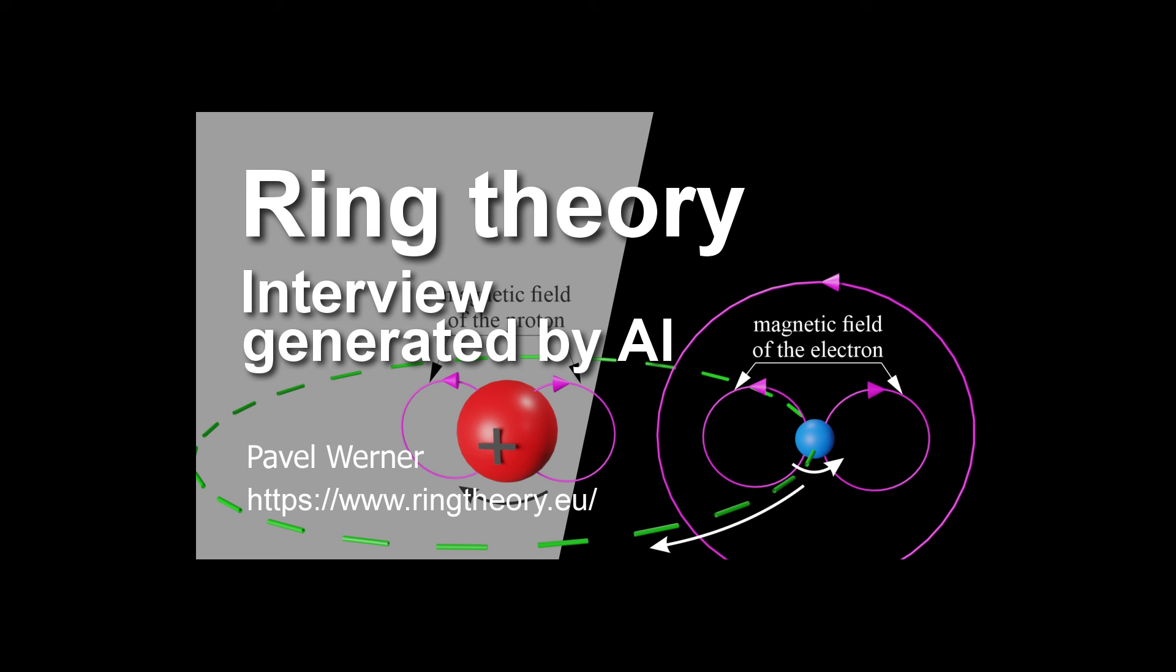Okay. This is definitely making me rethink everything I thought I knew about how atoms interact with each other. It's not just some random chemical attraction, but a carefully choreographed dance dictated by those tiny rings inside. But let's zoom out a bit. We've talked about the nucleus, the ring-shaped particles, the implications for chemical bonds. But what about the bigger picture implications of ring theory? How does this change our understanding of the universe as a whole?